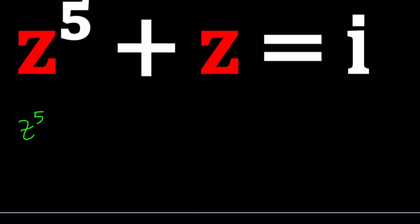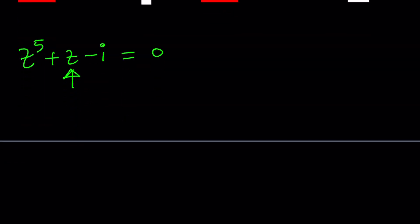Z to the fifth plus z minus i. Obviously we want to solve this equation, set this equal to zero, but in order to be able to solve this equation, we need to factor it first. How do we factor something like this? Well, z to the fifth plus z minus i can hopefully be factored into a cubic and a quadratic, because five is odd, we can't do two quadratics.